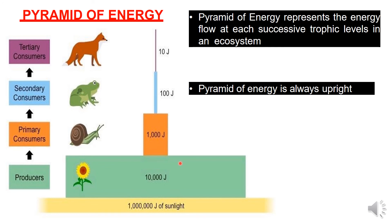Producers pass energy to the consumers. At each trophic level, a little energy is lost as heat during respiration. So the available energy decreases at each successive level. That is why the pyramid of energy is always upright in every ecosystem.